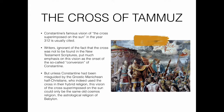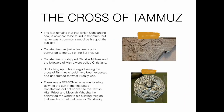Unless Constantine had been misguided by Gnostic Manichaean half-Christians who used the cross in their hybrid religion, this vision of the cross superimposed on the sun could only be the same old cosmic, astrological religion of Babylon. Constantine had, just a few years prior, converted to the cult of Sol Invictus. He worshipped Christos Mithras, and the followers of Mithras were called Christians. Constantine did not convert to Yahusha — he converted the world to his existing religion known as Christianity.